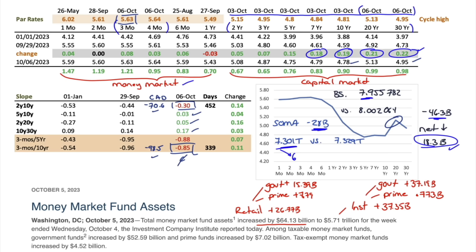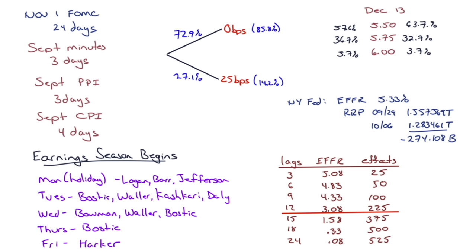Money market funds continue to draw money — 64 billion dollars this week: retail up 26 billion, institutions up 38 billion. Government funds: retail up 15.39 billion, institutions up 37.19 billion. Prime funds up 7.8 billion.